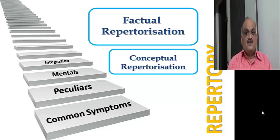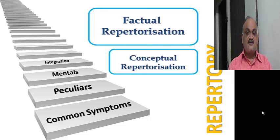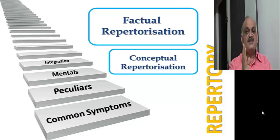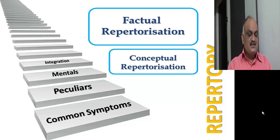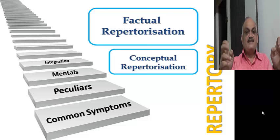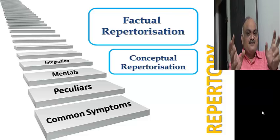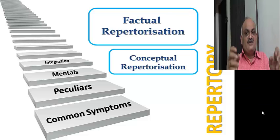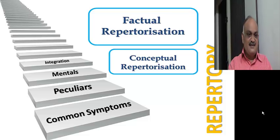Common symptoms are very important in acutes and especially for beginner homeopaths. Easy symptoms like somebody says they have a headache and pain on the right side — you can easily find these in the repertory. But if somebody says a coma patient is moving their hands in a particular way, you are not able to find a rubric for that because it is very peculiar.